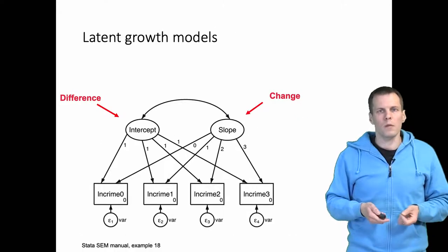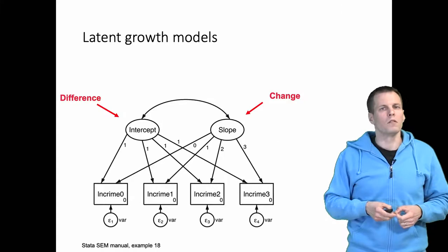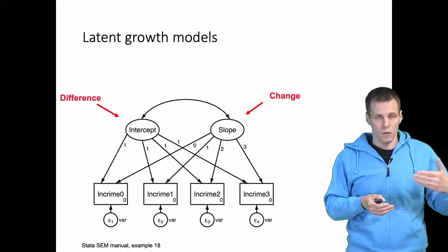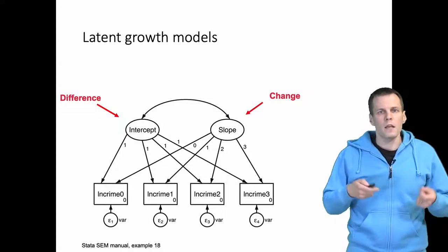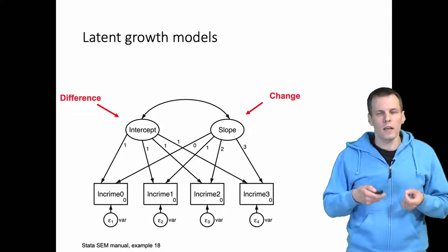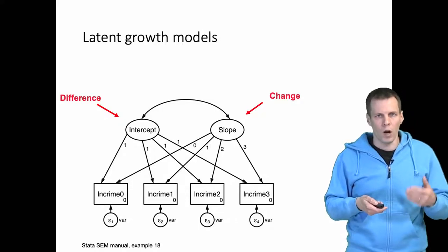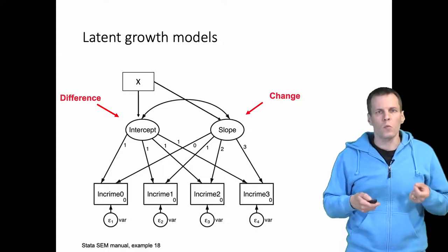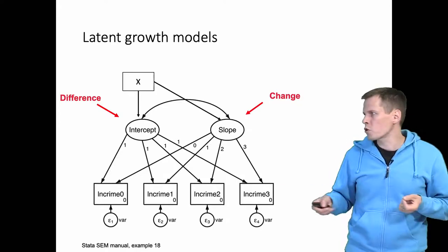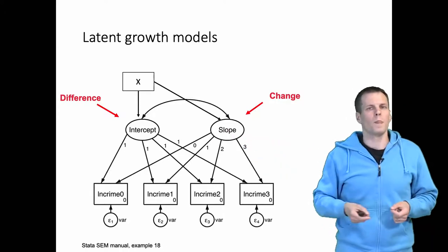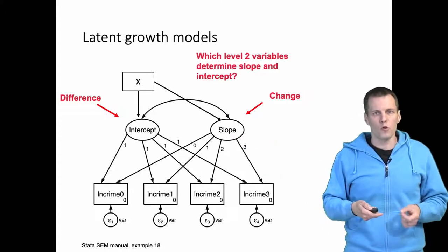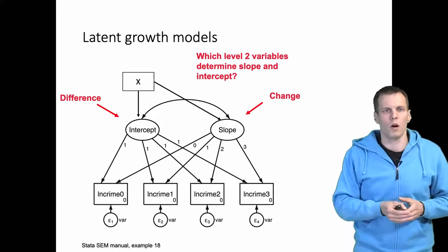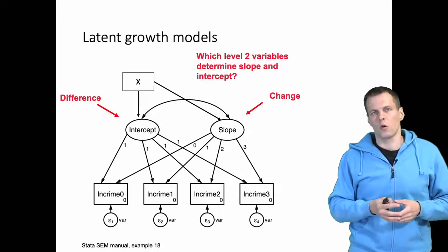We can do the same here for the latent growth model. Typically we are not simply interested in describing the different trajectories that cases take. Instead we are interested in explaining what determines that some cases go up, others go down, and what determines the initial differences. To do that we add predictors that are observed and that explain the latent variables. These variables would be level two variables, so they're variables that don't vary over time, for example a city or where the city is located.